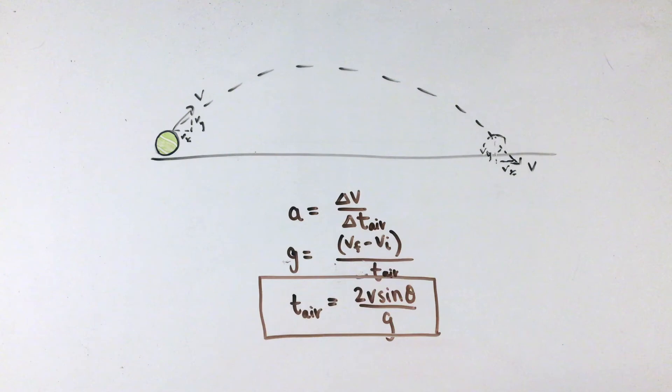Using the equation that the acceleration changing this velocity, or gravity, must be equal to the rate of change of velocity, we can solve for the total time the object is in the air.